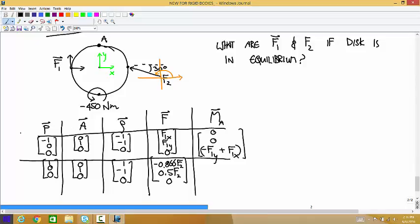And then the cross product is 0, 0. And then for the Z component, 0.5 F2 minus 0.866 F2. And that one we can simplify, so that's 0, 0, negative 0.366 F2.